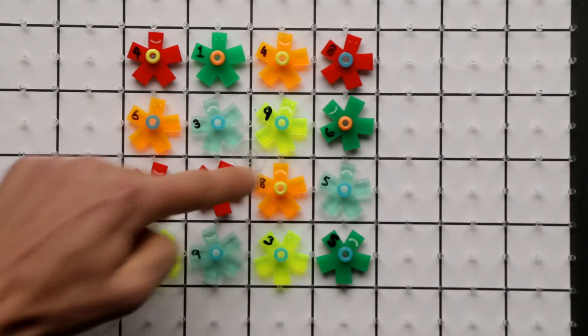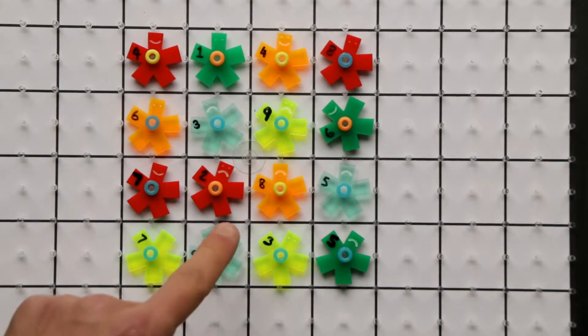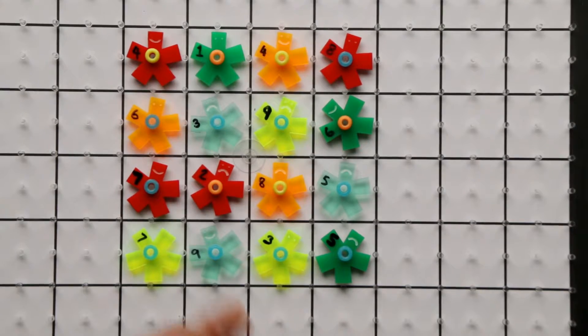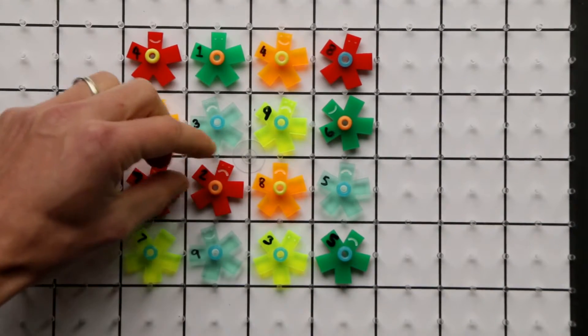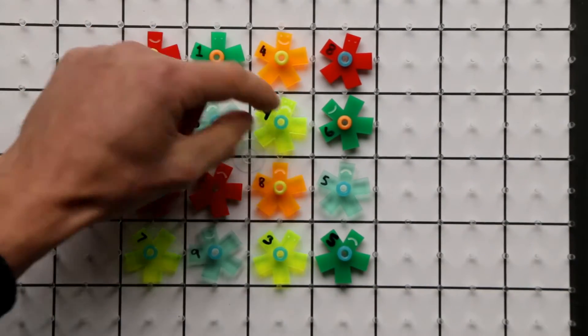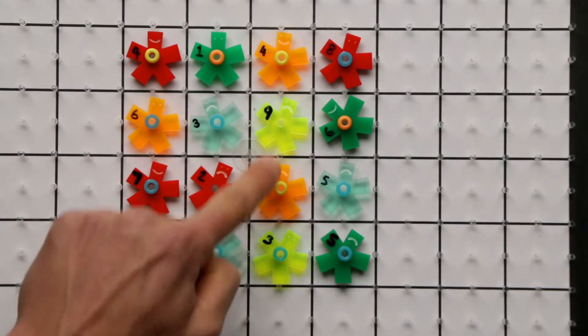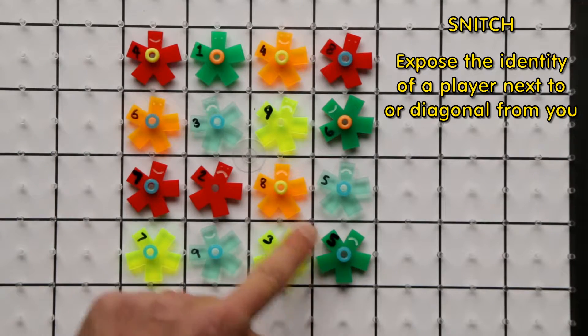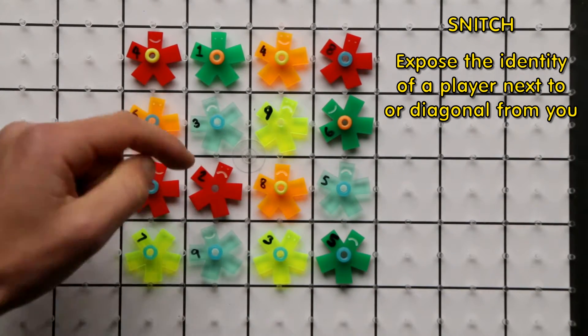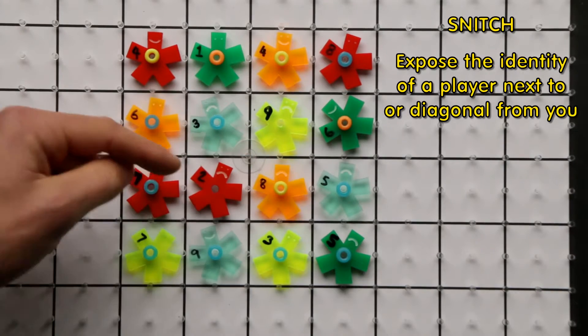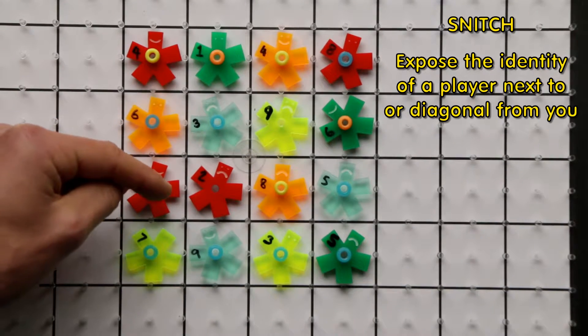If while you're stealing all these things, people realize who you are, they can expose you and then they can reveal who you are. So for example, if you stole the two and the nine and you were this person here, you're on 19 gems. And if this person here exposed you because they're next to you,